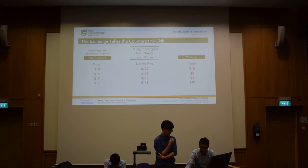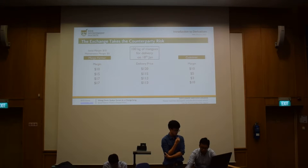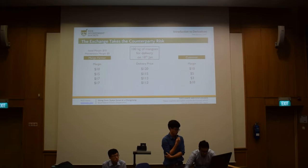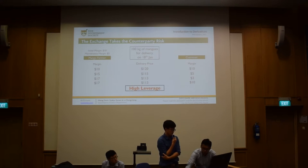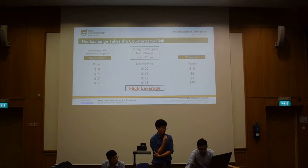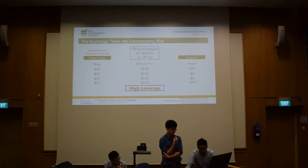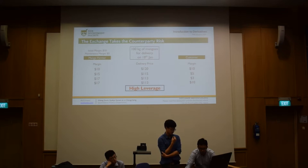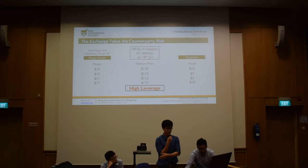However, the margin leads to very high leverage. When the market price changes, the margin amount varies by a much greater proportion. When the delivery price decreased from $120 to $115 — less than a 5% change — the margin account decreased by about 50%. This is the high leverage of the futures market, which allows traders to use a small amount of capital to control an investment of much greater value.